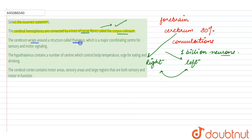The second one is the cerebrum wraps around a structure which is called as thalamus which is the major coordinating center for the motor and the sensory signaling.